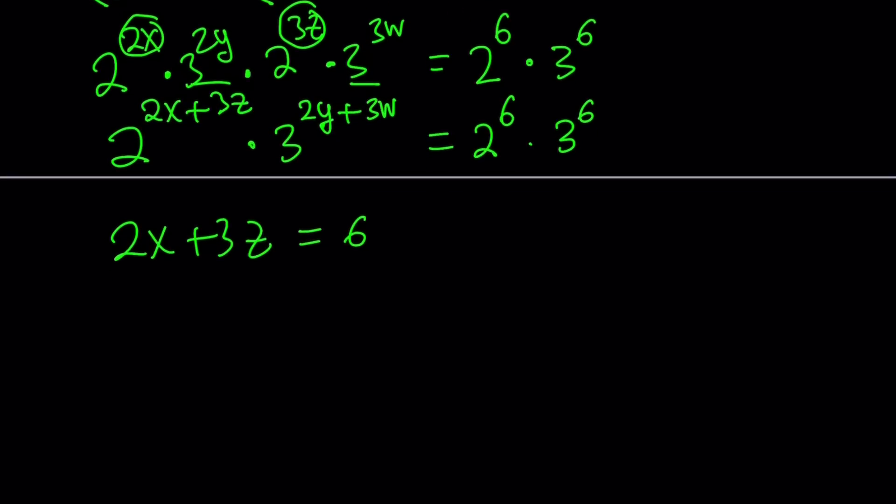We can safely say that 2x plus 3z is equal to 6, and 2y plus 3w is equal to 6. So we've got a system of equations where x, y, z, w are non-negative integers. In other words, they have to be greater than or equal to 0 and they have to be integers. Let's see how we can solve these equations. We have 4 variables but 2 equations. But remember, this is like a Diophantine equation and this just became a Diophantine system.